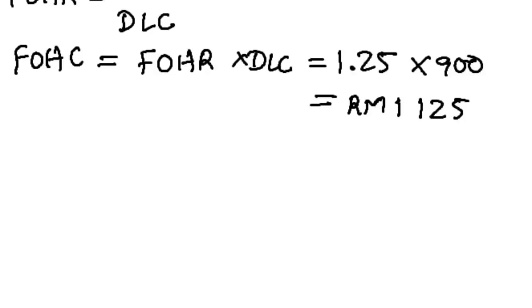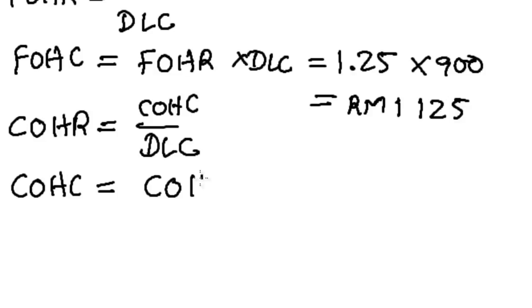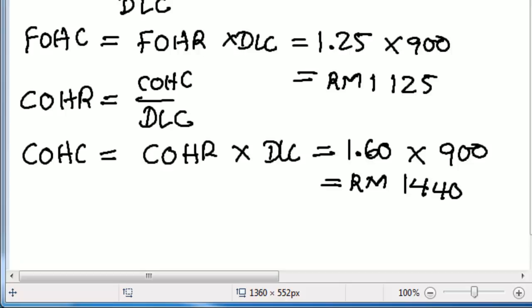The factory overhead rate FOHR = FOHC / DLC, so FOHR = 125% = 1.25. Therefore FOHC = 1.25 × DLC = 1.25 × 900 = 1,125 ringgit. The corporate overhead rate COHR = 160% = 1.60, so COHC = 1.60 × 900 = 1,440 ringgit.